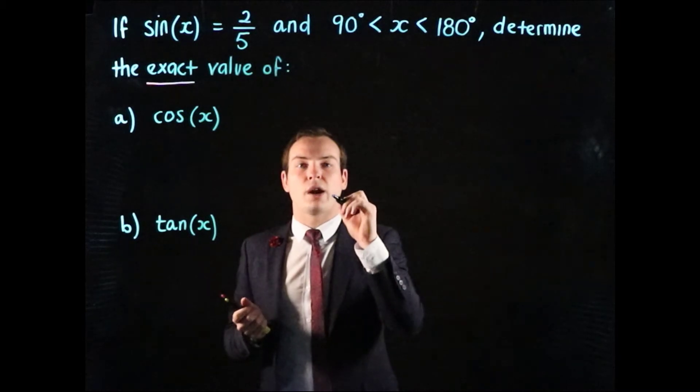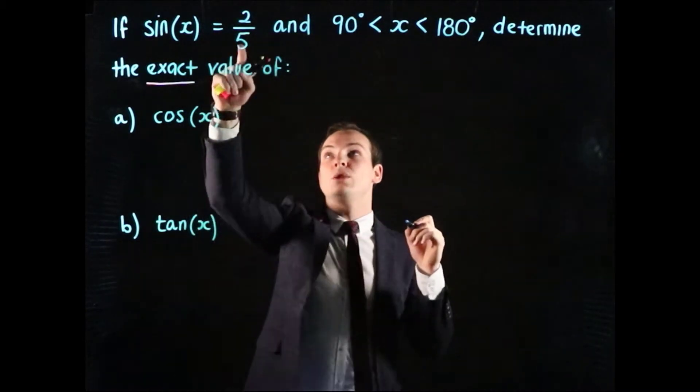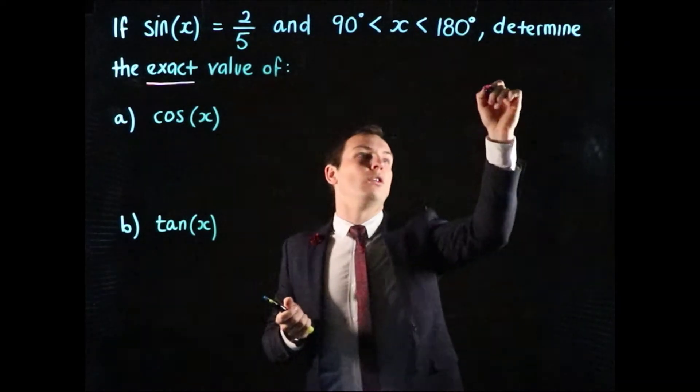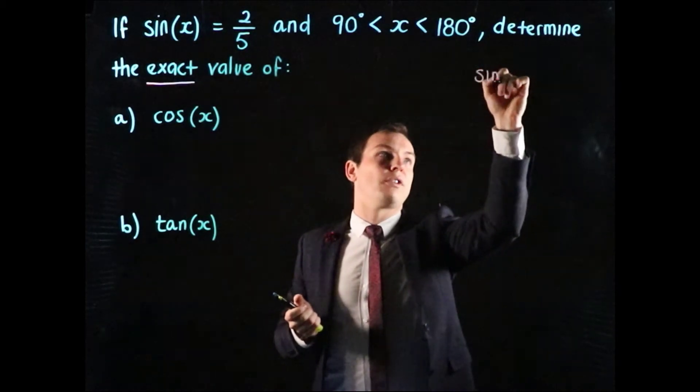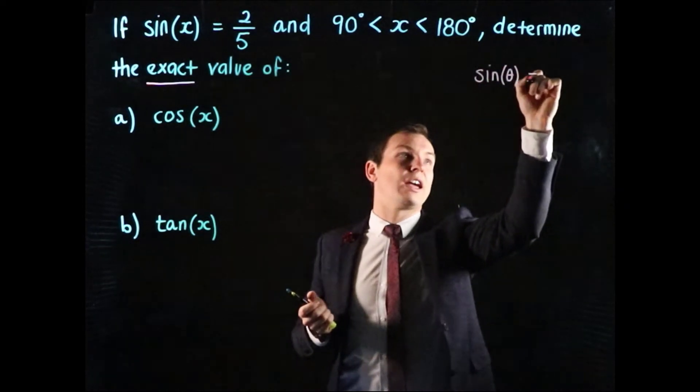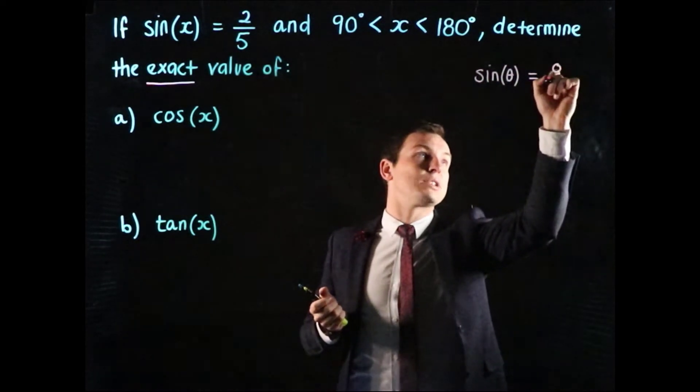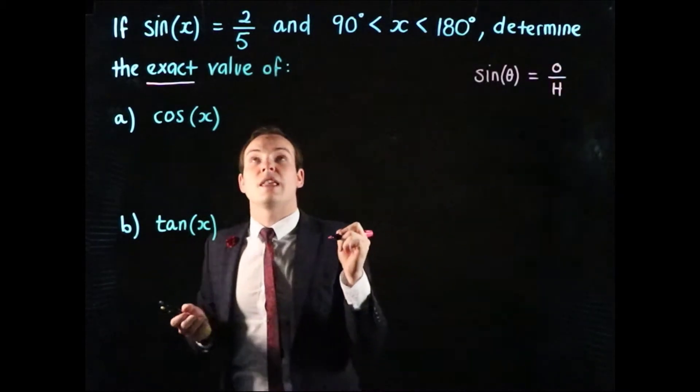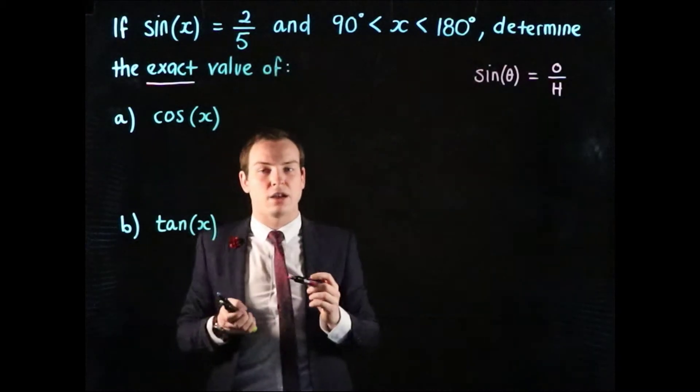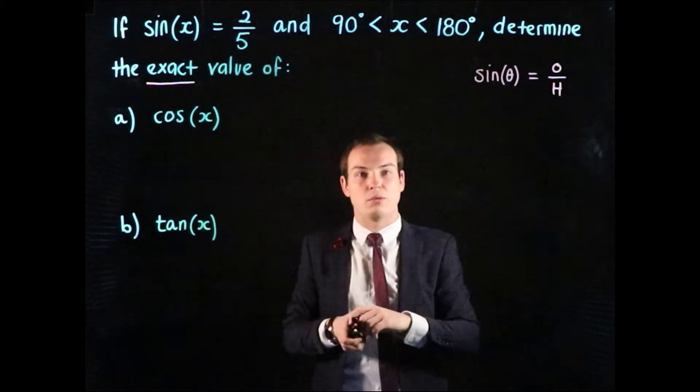Let's start with the right angle triangle that relates the 2 and the 5. We know that sine of some angle theta is equal to the opposite over the hypotenuse. So we can think of 2 as being the opposite and 5 as being the hypotenuse for the triangle we want to draw.